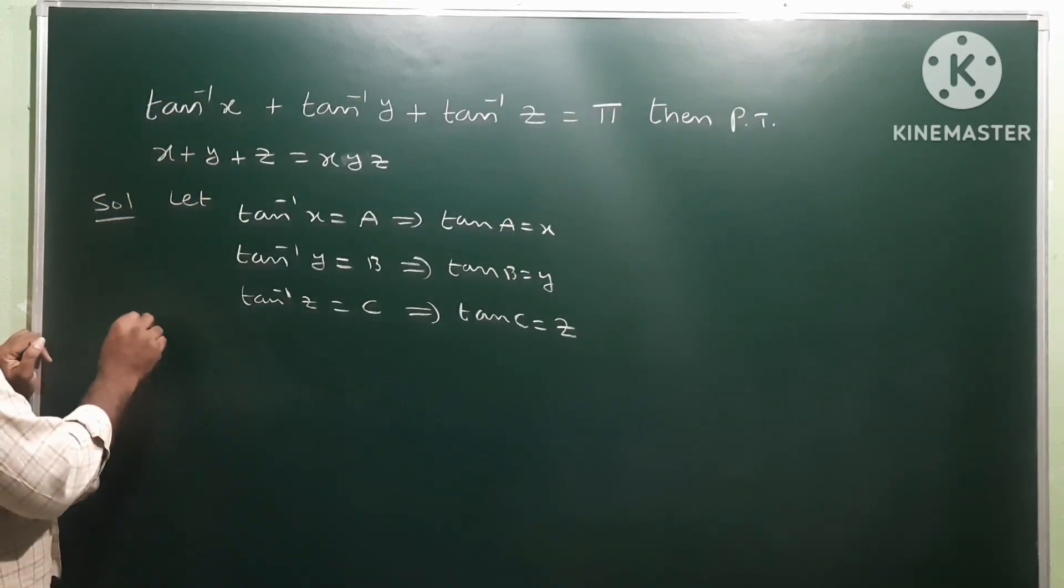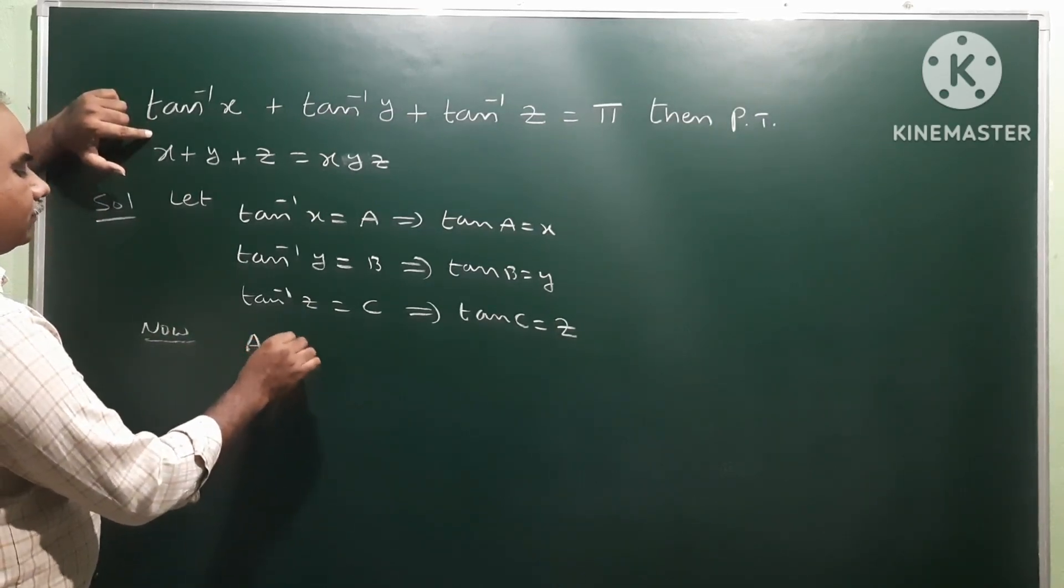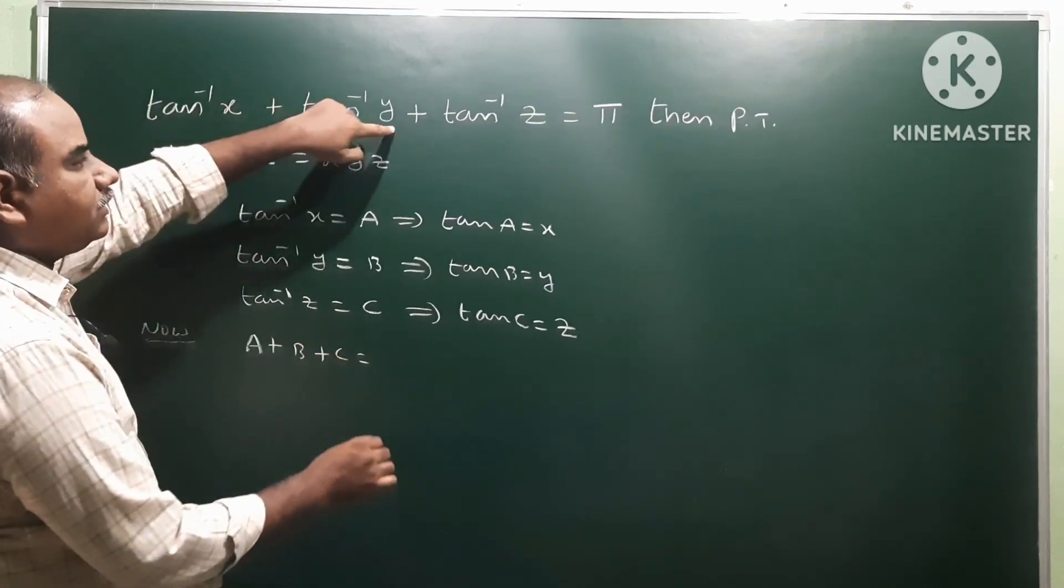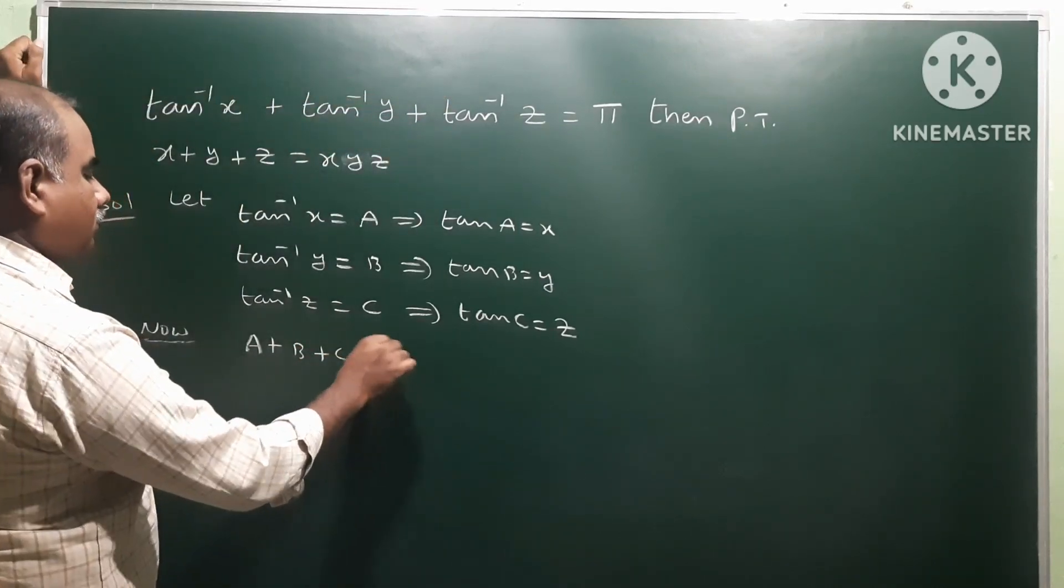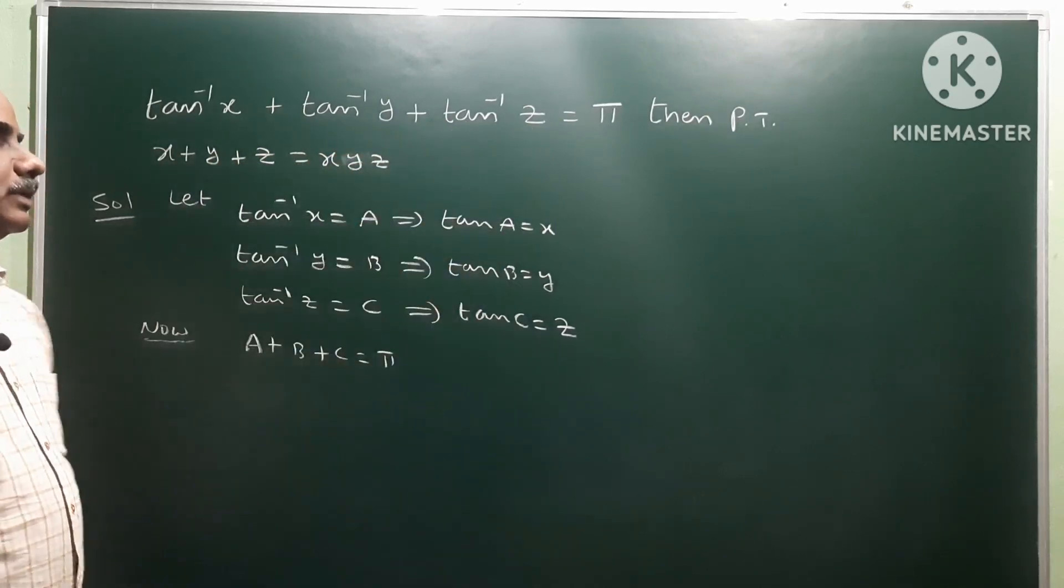Now we have A plus B plus C as π. So A plus B plus C is equal to π.